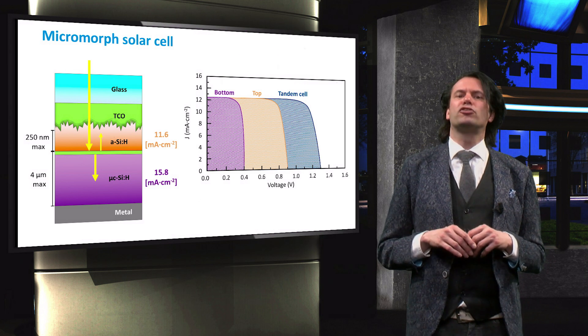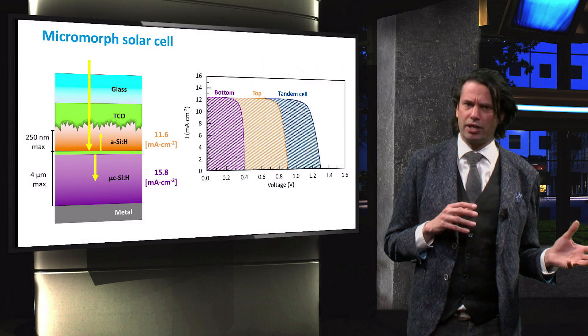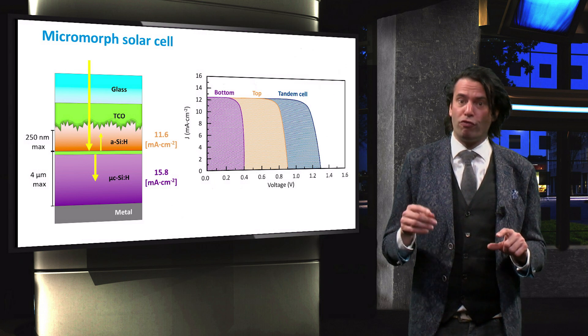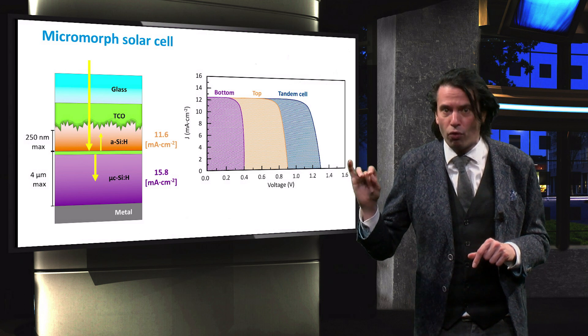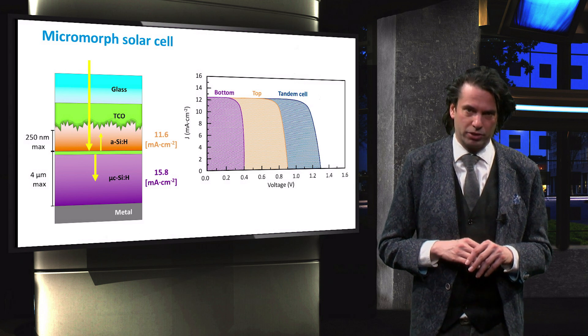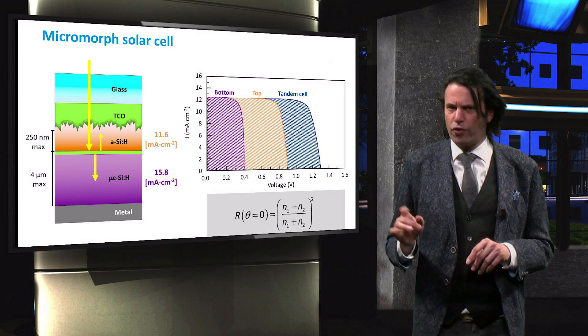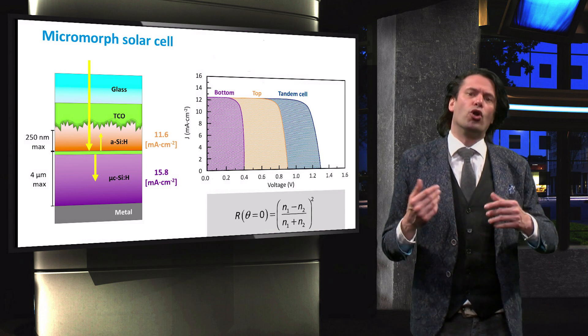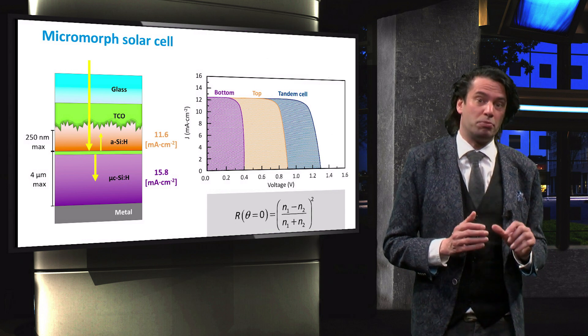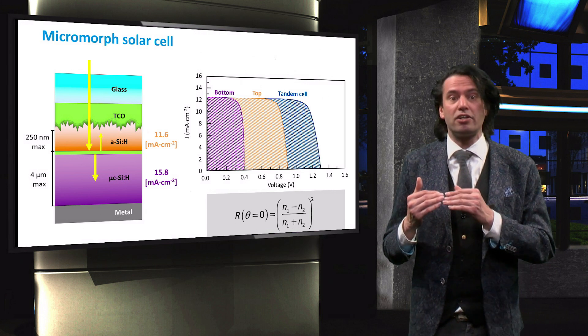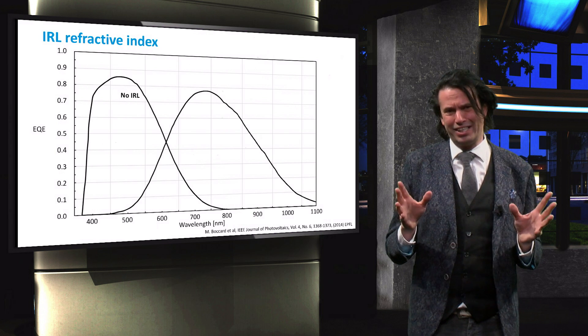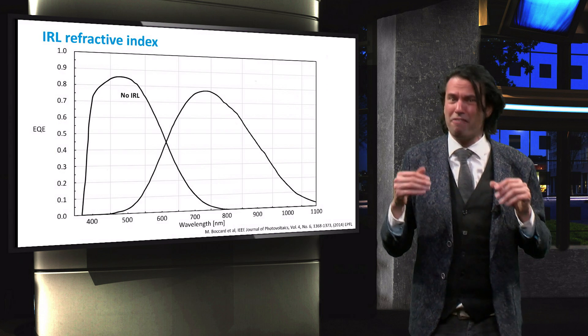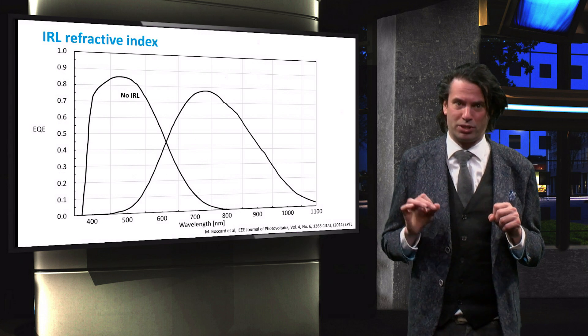The refractive indices of amorphous and microcrystalline silicon vary from over 5 at a wavelength of 300 nm to just under 4 at a wavelength of 700 nm. Therefore, according to the Fresnel equations, the lower the refractive index of the intermediate reflective layer, the greater the reflectivity. But how exactly does the intermediate reflective layer affect the performance of the top and bottom cell?